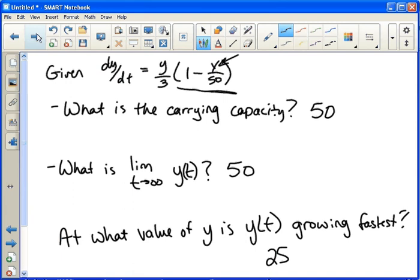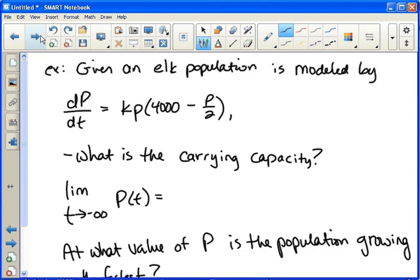Given an elk population is modeled by dp over dt equals kp times 4,000 minus p over 2, what is the carrying capacity? So this is an example of what I was talking about. This is still logistic. I know it's not in the traditional form. But just think about there's different ways to write a linear equation. You know, there's a slope intercept form. There's a point slope form. Those are all linear equations. They're just written slightly differently. Same idea here.